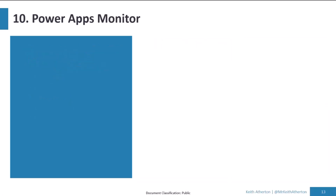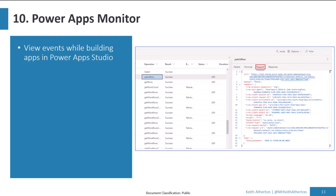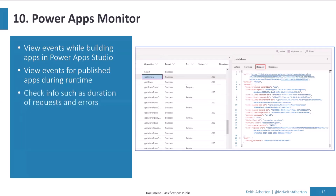Tip ten: the Power Apps Monitor. This shows a list of operations called, whether they're successful, duration, and on the right-hand side, more details including the formula location and the request and response for network calls. It can be verbose but useful for troubleshooting errors and performance. You can view events while building apps in Power App Studio, and also for published apps during runtime — so if you can't open the studio and need to troubleshoot production, it's invaluable. Access it via the App Checker or advanced tools.